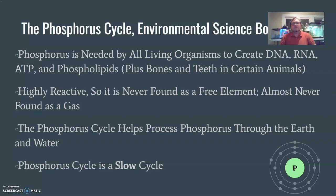The phospholipid bilayer is what helps to keep some materials inside of the cell and some materials outside of the cell. For animals specifically, phosphorus helps to form bones and teeth. So it's not something that other organisms worry as much about, but phosphorus is important for that as well.